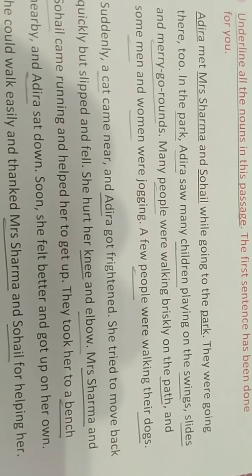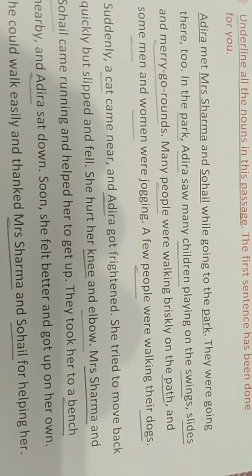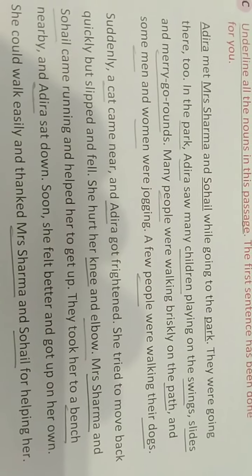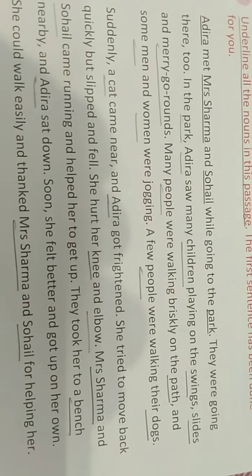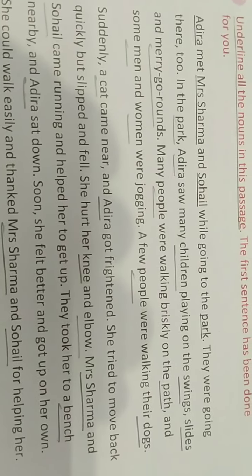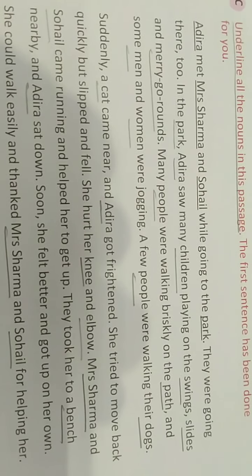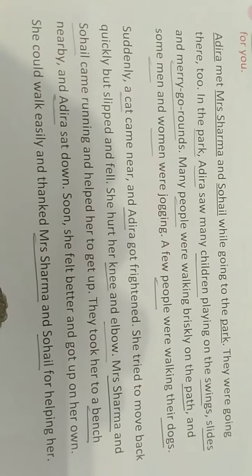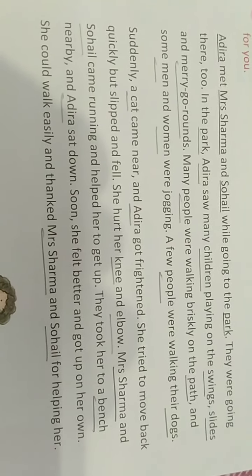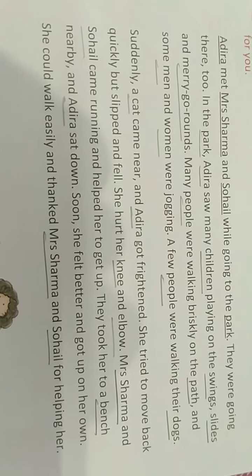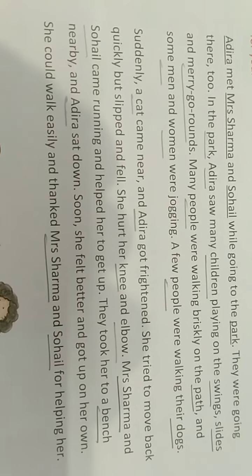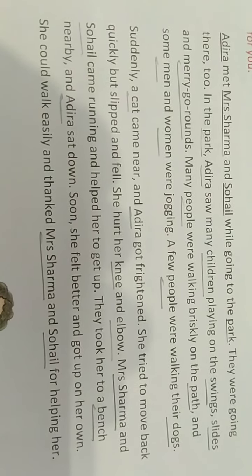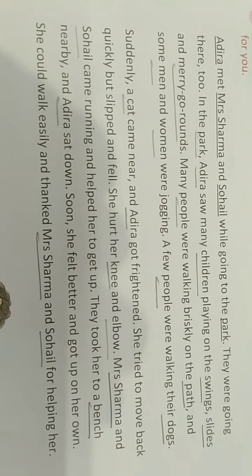Next line: 'Many people were walking briskly on the path and some men and women were jogging.' In this sentence, path, men, and women are the nouns. Next line: 'A few people were walking their dogs.' People and dogs are the two nouns.